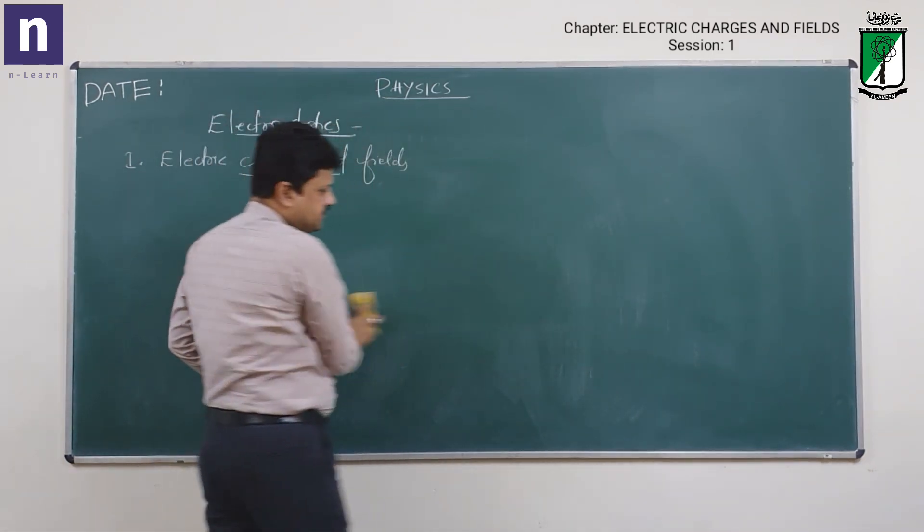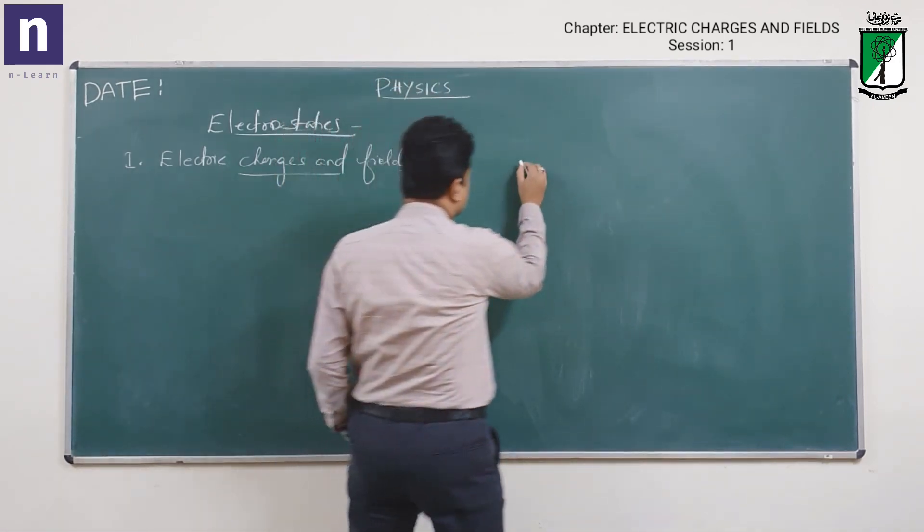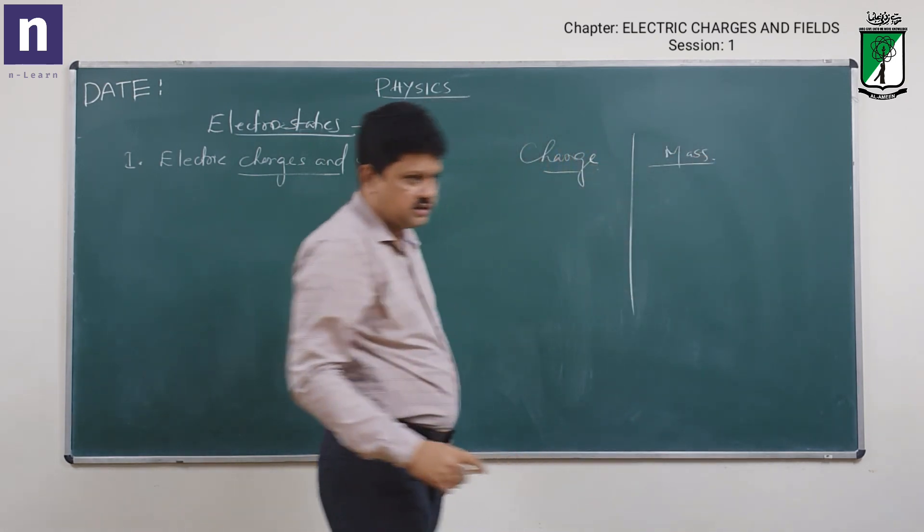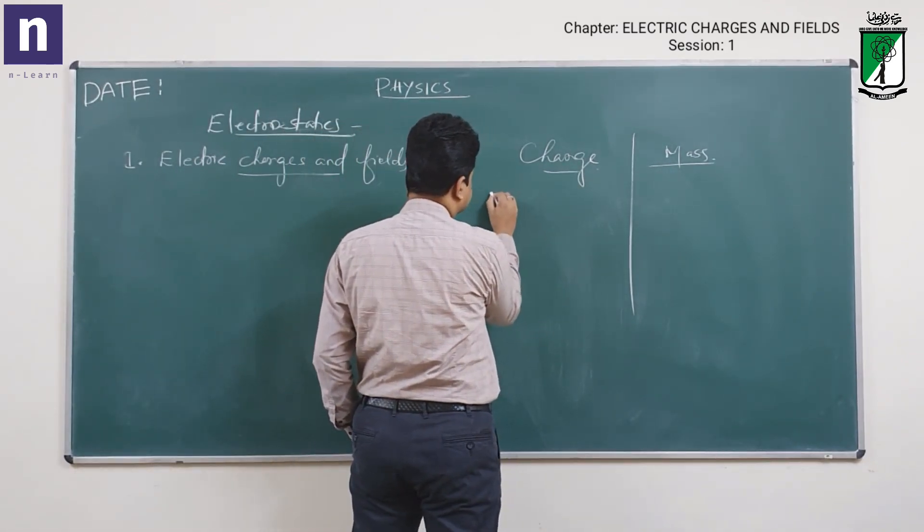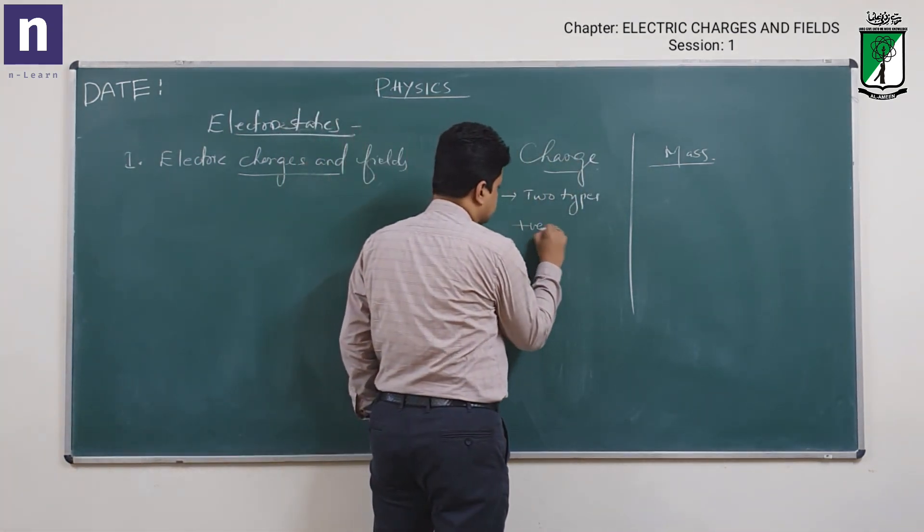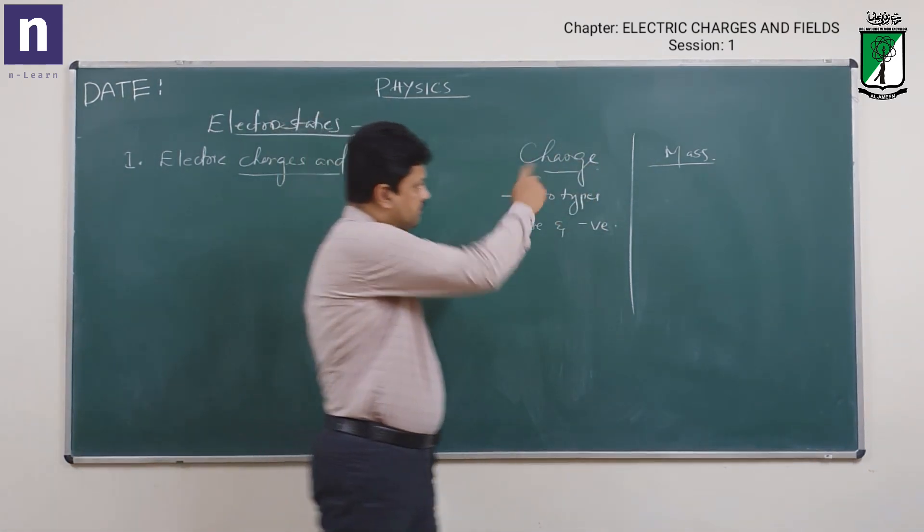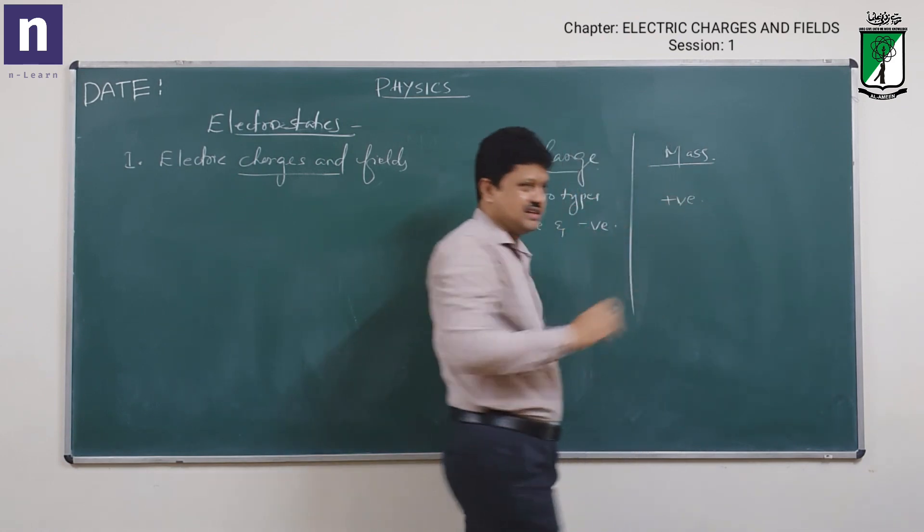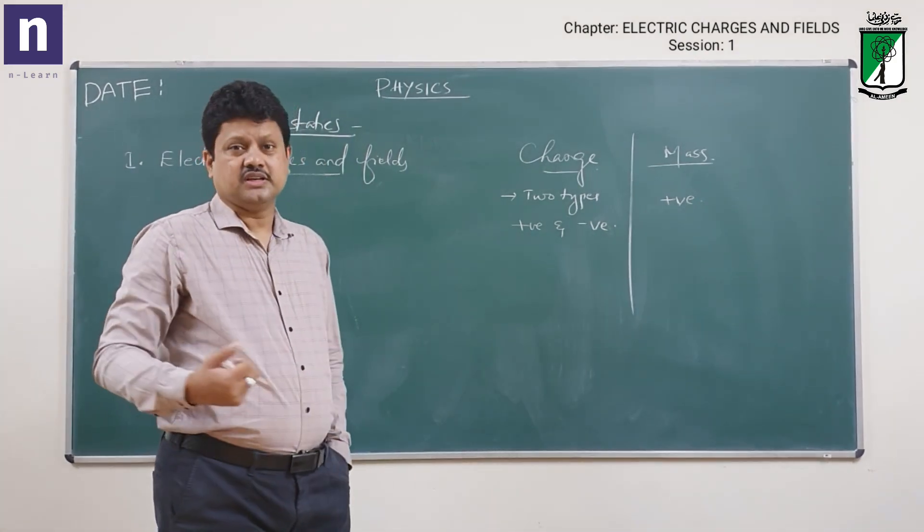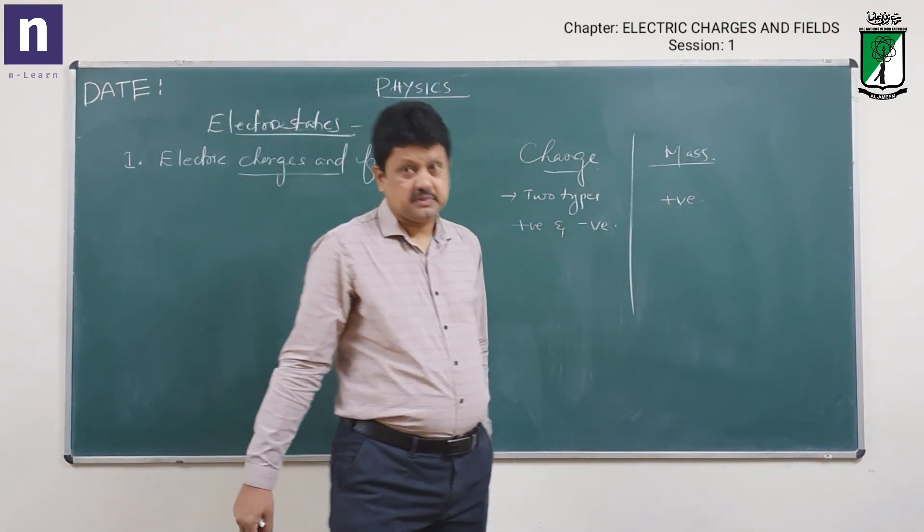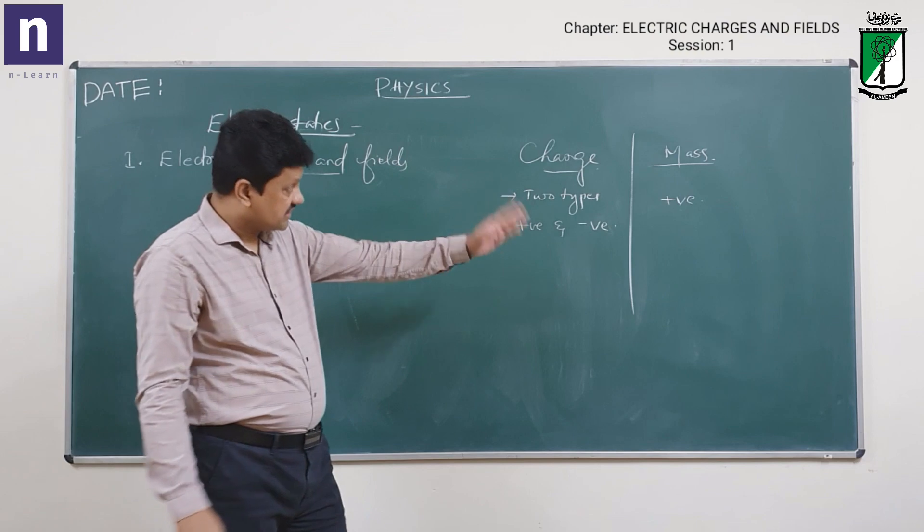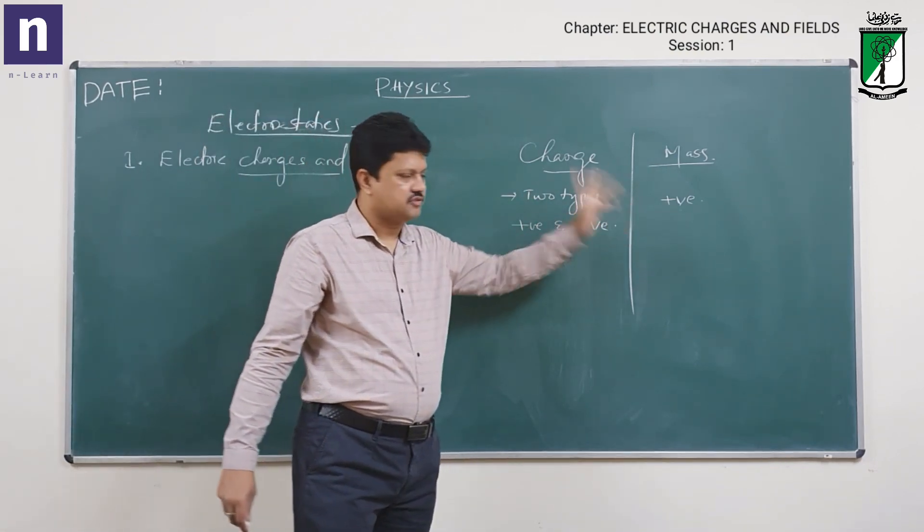Let us try and understand some basic differences between charge and mass. Charges are of two types: positive and negative. Whereas mass is only one type. There is nothing like negative mass. You have half a kg, 1 kg, 2 kg, 100 grams, milligrams, micrograms, whatever - that is positive mass. But you don't have negative mass, like minus 1 kg or minus 2 kg. So one of the characteristics is charges are of two types, but mass is of only one type.